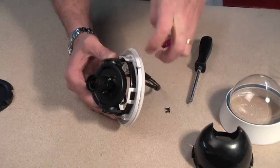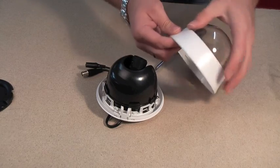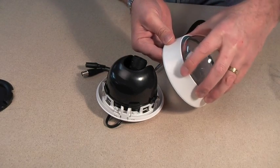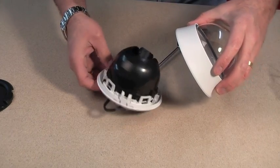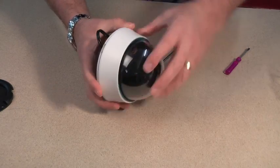You now need to refit the masking panel and re-secure it with the two Phillips screws. And then line the arrow up to where the wire comes out of the camera body. Simply clip the dome back in position onto the camera body.